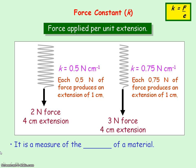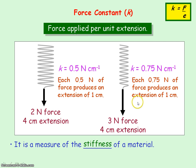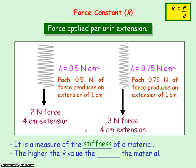The force constant is a measure of the stiffness of a material. Looking at these two springs, the spring with the larger value of force constant needs a greater force to get the same extension, so it has the greater stiffness.